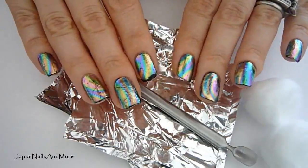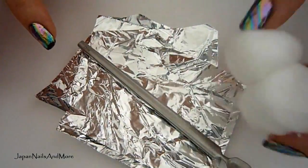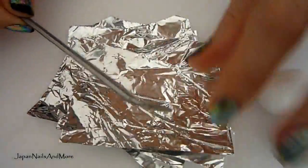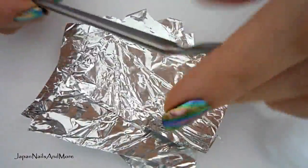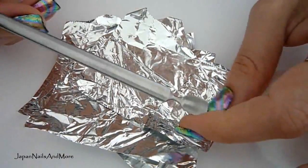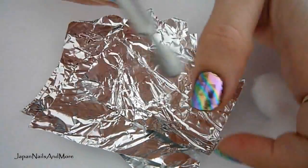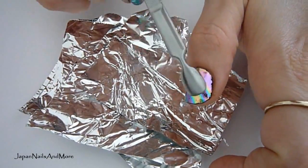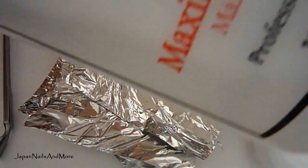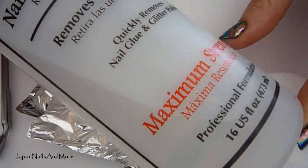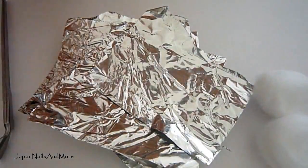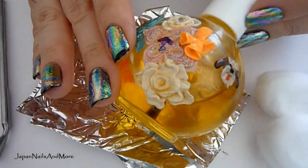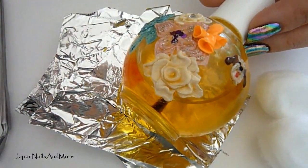You're going to need some cotton balls, some foil cut in small little pieces that fit your fingernails, and this stainless steel tool that looks like a cuticle pusher but is actually to help remove the gel overlay off of your fingernails. I'm also going to be using some 100% pure acetone.